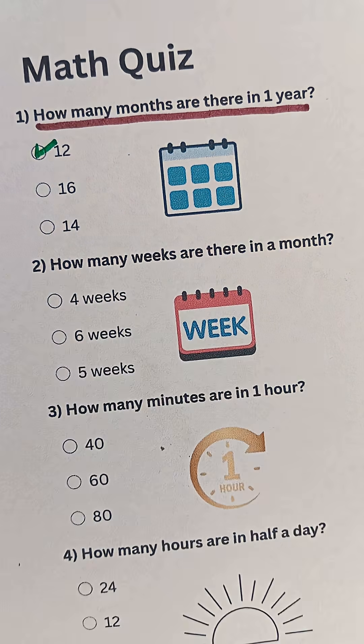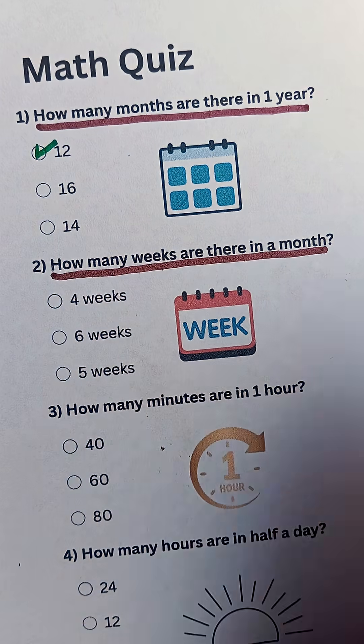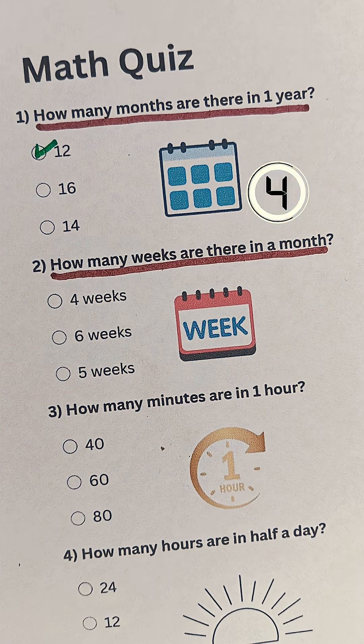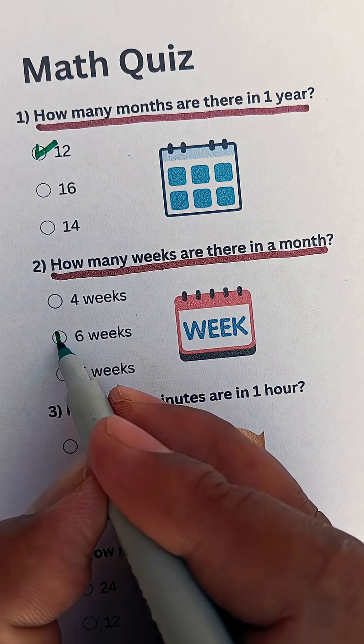Question 2. How many weeks are there in a month? Answer: 4 weeks.